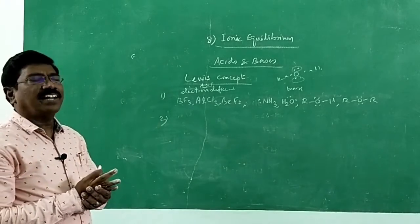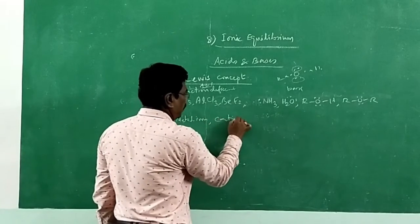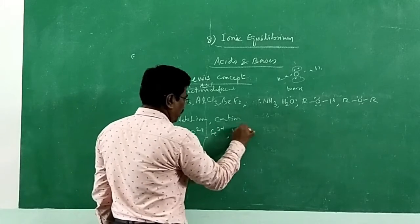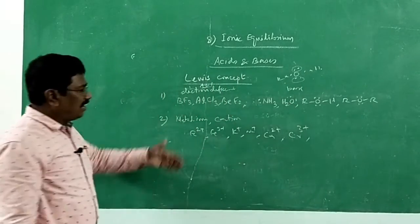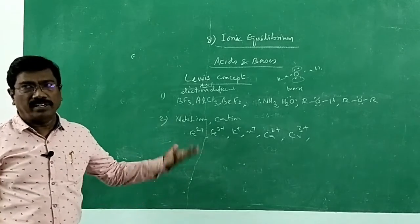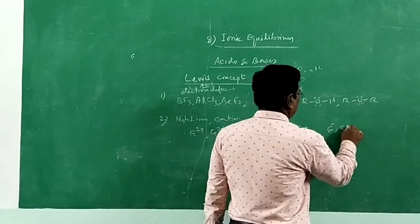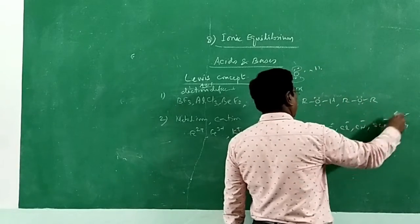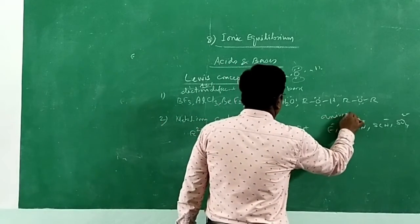Metal ions — that is, cations such as Fe²⁺, Fe³⁺, K⁺, Na⁺, Ca²⁺, Cr³⁺ — any metal ion can act as a Lewis acid because it has to accept electrons, being a positively charged ion. And all anions — F⁻, Cl⁻, CN⁻, thiocyanate ion, sulfate ion — any negatively charged ion, all anions, are Lewis bases.